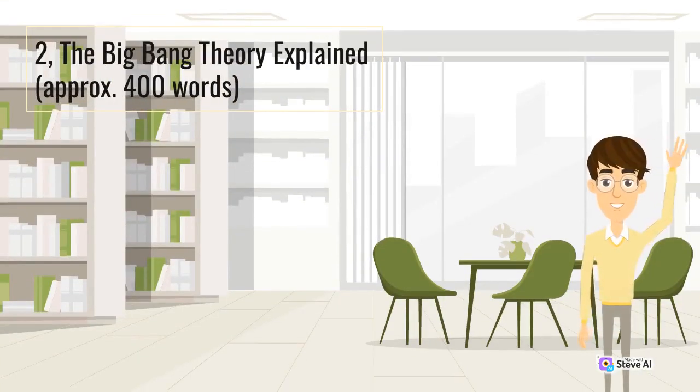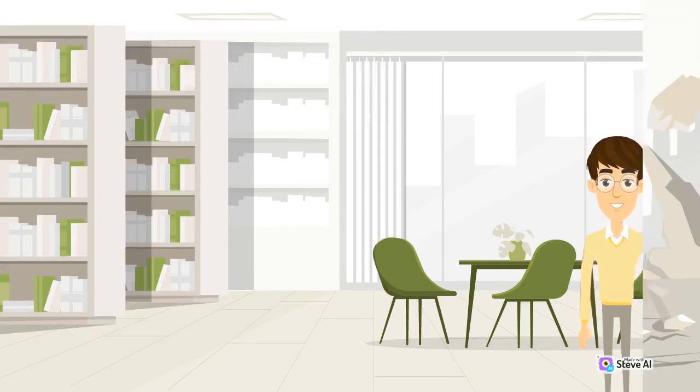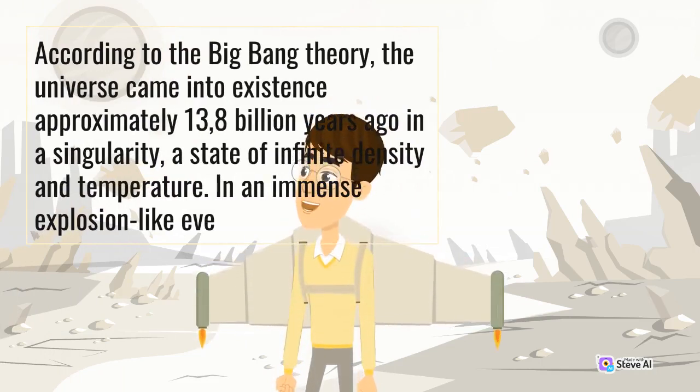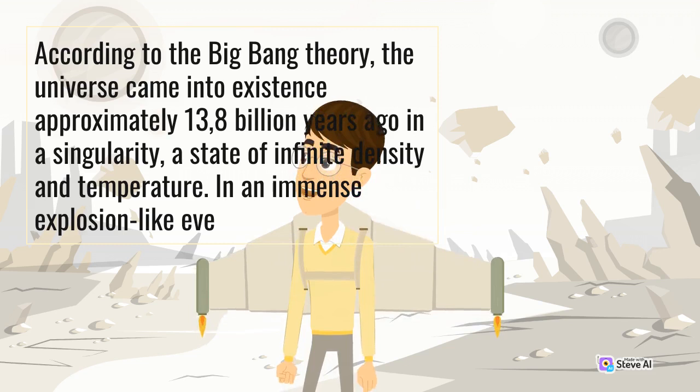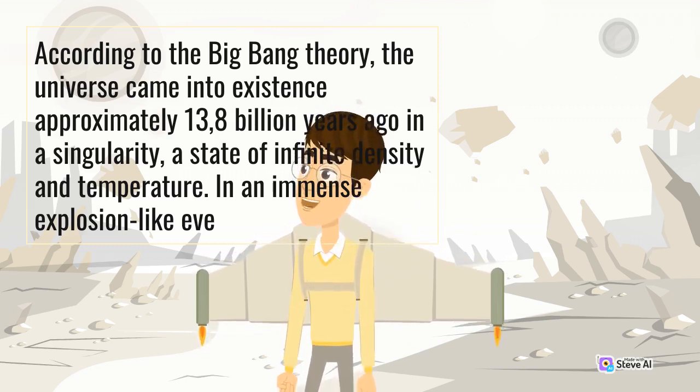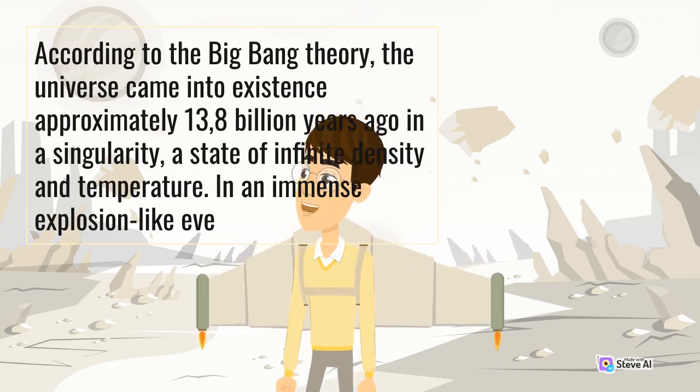The Big Bang Theory Explained, approximately 400 words. According to the Big Bang Theory, the universe came into existence approximately 13.8 billion years ago in a singularity, a state of infinite density and temperature in an immense explosion-like event.